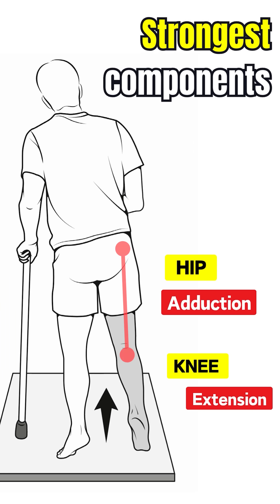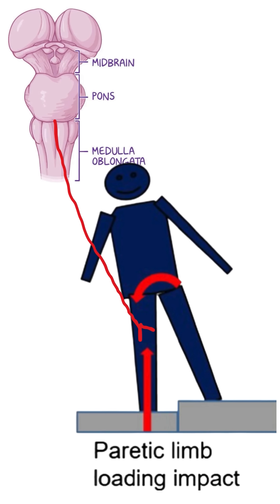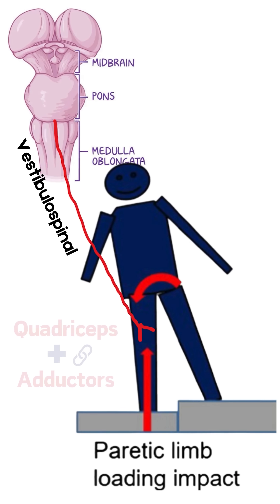The strongest components of the lower limb extensor synergy are hip adduction and knee extension — these two muscles are very closely linked together. For example, if we make a hemiplegic patient stand and the patient has a fear of falling, there will be increased activity in the vestibulospinal pathway. As a result, the quadriceps is going to become spastic because the patient doesn't want to fall and avoids buckling of the knee.